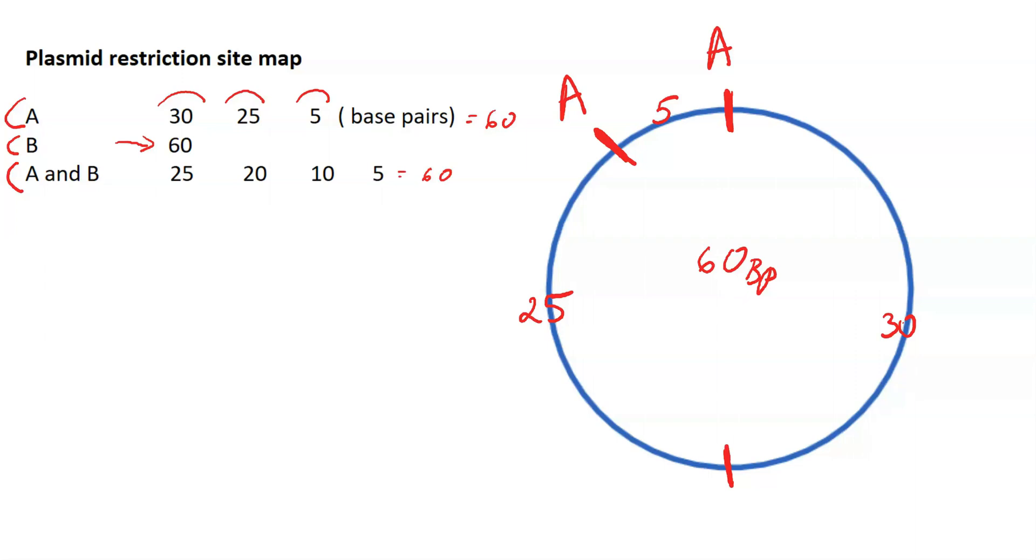Next, look at the double digest because it would be nearly impossible to tell where enzyme B cuts at this point, since it only cuts once. The double digest comes from tube C. You can see we have four fragments that resulted from this digestion.